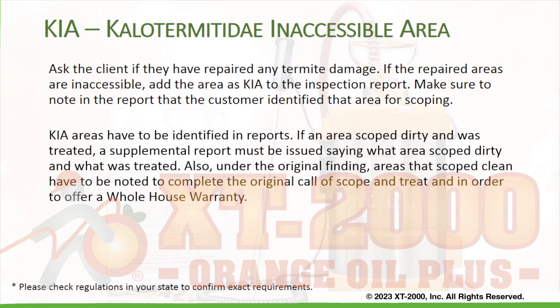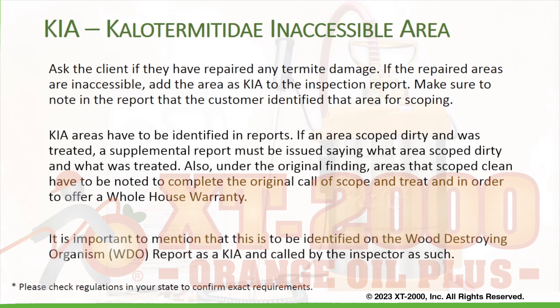Also, under the original finding, areas that scoped clean have to be noted to complete the original call of the scope and treat, and in order to offer a whole house warranty. It is important to mention that it is to be identified on the wood destroying organism report as a KIA and called by the inspector as such.